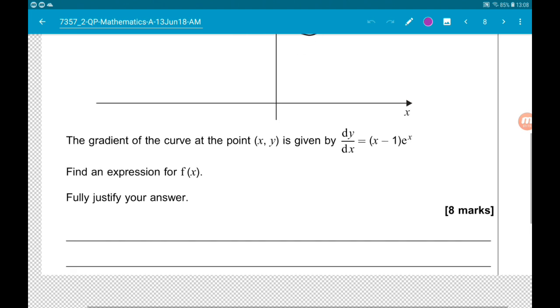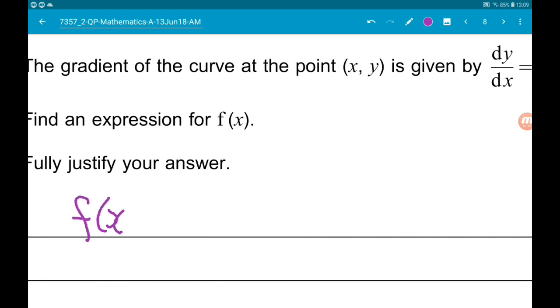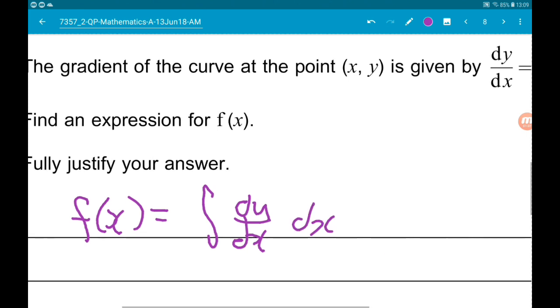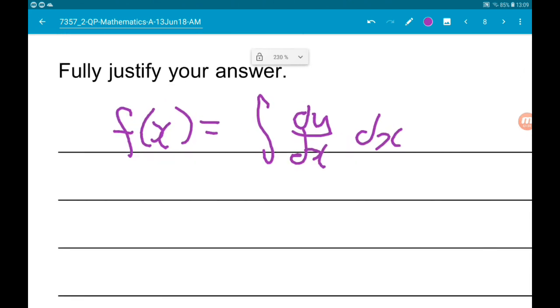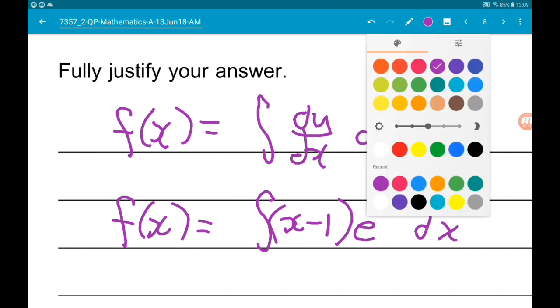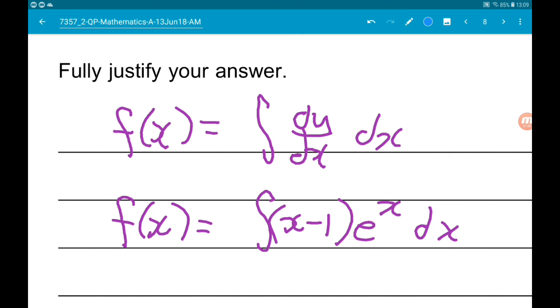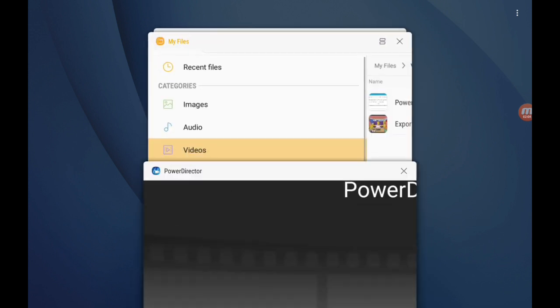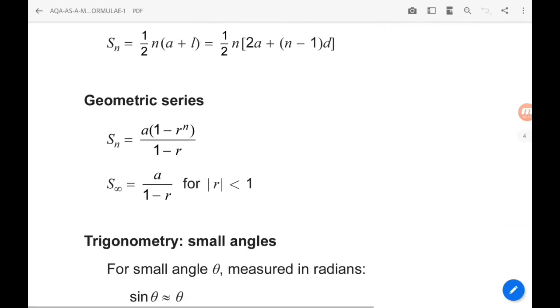Okay, well we know that f of x is equal to the integral of dy by dx with respect to x. So we know then that f of x is equal to the integral of x minus one times e to the x. Now this has two functions, two separate functions, x minus one and e to the x. So this is a job for integration by parts.